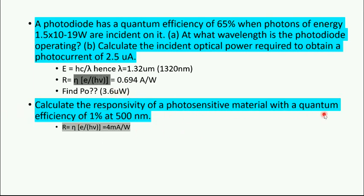Similar question: calculate the responsivity of a photosensitive material with quantum efficiency of 1% at 500 nanometers. What are the given parameters? Efficiency is 1%, that is 0.01, meaning when 1000 photons are incident only 10 electrons are generated. Use R equals η times e by hν. ν equals c by λ where λ is 500 nanometers. You will find R equals 4 milliamperes per watt.